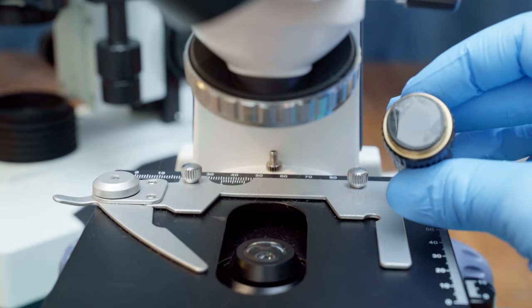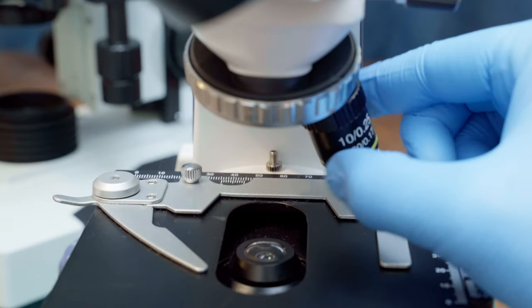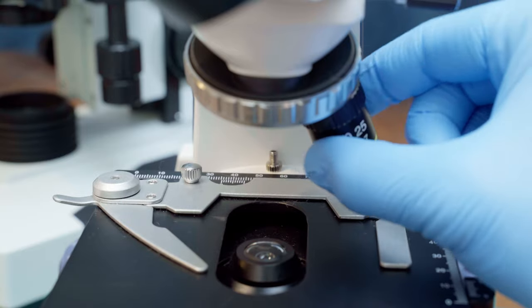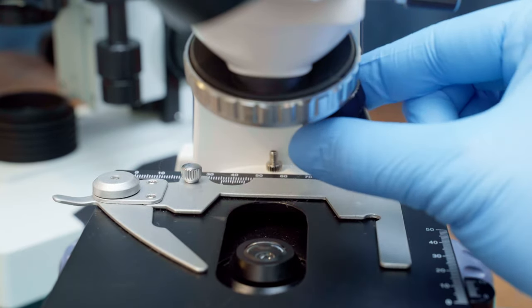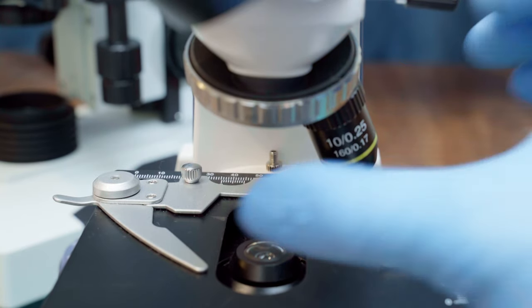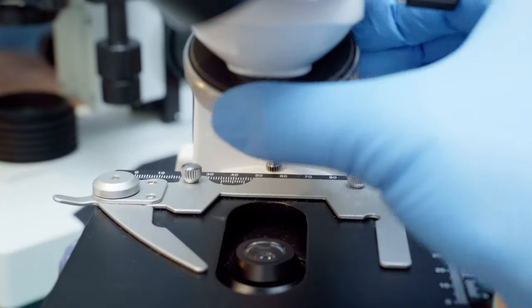Screw the objective back into your microscope turret, but don't tighten it down all the way. Leave it a little bit loose. Now pat yourself on the back. The hard part is over. We're almost ready to see in 3D.